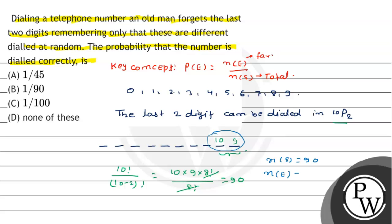अब n(E) की बात करें तो correct dial number तो एक ही number होगा, so there is only 1 way to dial the correct number. यह हमारे पास favorable outcomes आ गये। Therefore, required probability = n(E) by n(S) = 1 by 90. अगर options में देखें तो 1/90 option B में है, so option B is the correct answer. Hope that you understood it well, best of luck.